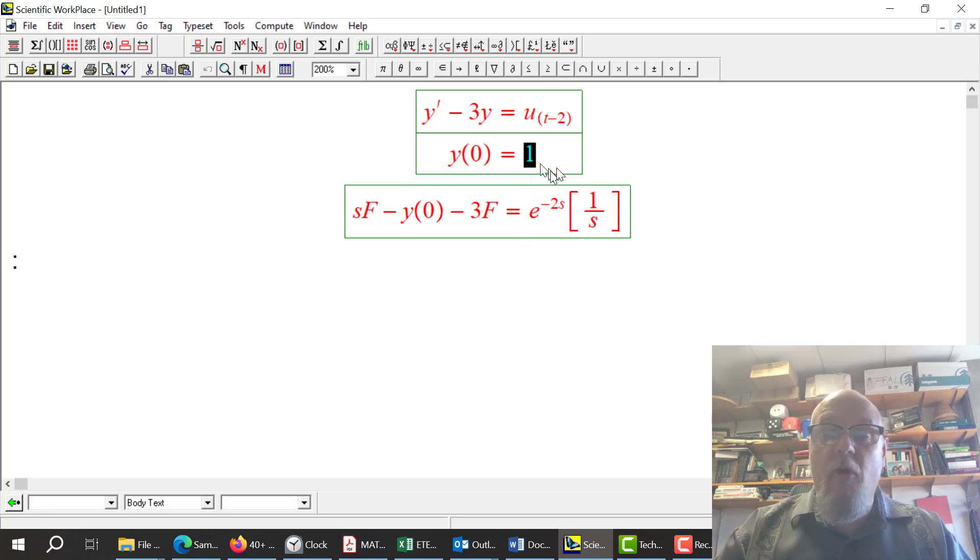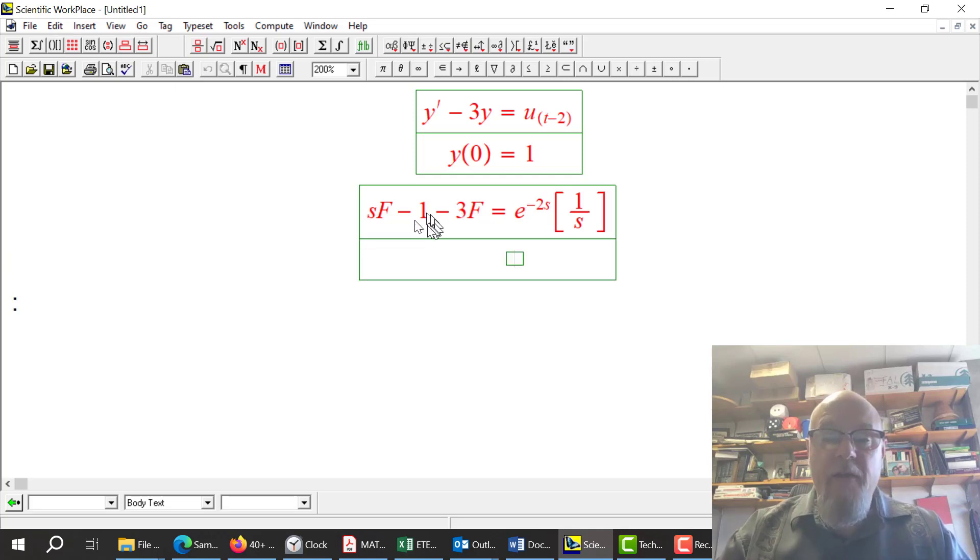So let's incorporate the initial condition, y naught equals 1. And now we need to solve for f. So this minus 1 is going to go to the other side and become a plus 1.